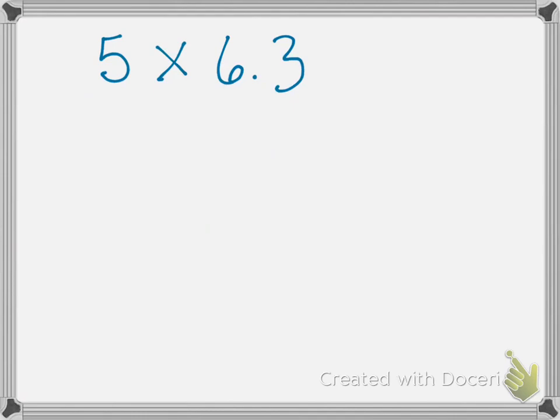Here we have a whole number 5 times a decimal number 6 and 3 tenths. You want to remember to line up the numbers. I usually like to put the numbers with the most digits on top. Remember in multiplication it doesn't matter what order you do them. So I'm going to do it that way. You have that choice if you want to.